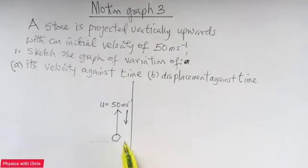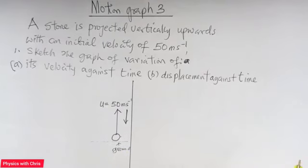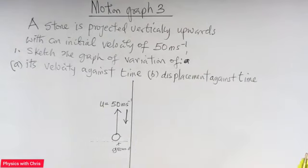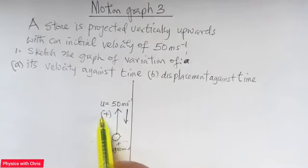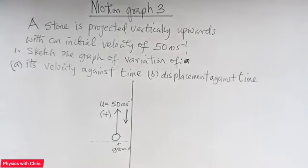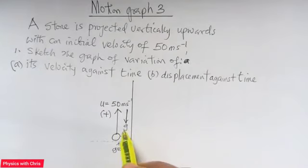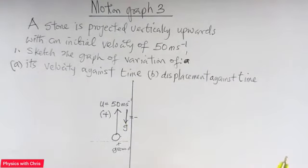Let's say this body is projected from a point we'll call the ground, and it's given an initial velocity in the upward direction — 50 meters per second. Recall that velocity is a vector quantity; we need to specify both its magnitude and direction. The magnitude is 50 meters per second and the direction is upward. So I'm going to give a positive sign to the upward direction, and since acceleration due to gravity acts downwards, I'm going to give it a negative sign, because the two directions are not the same.